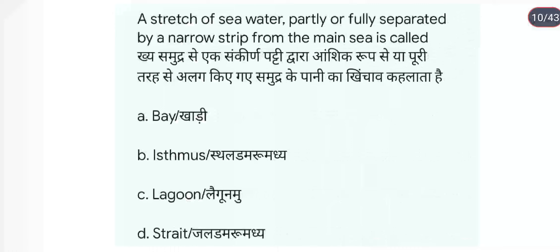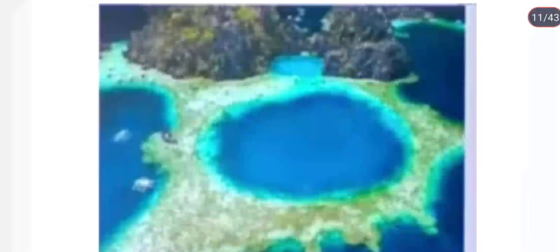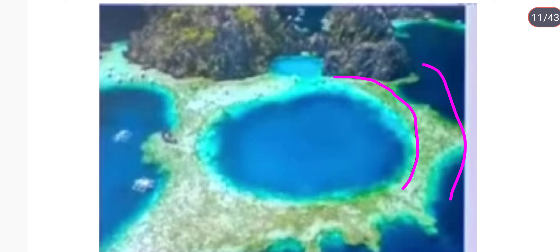A stretch of sea water partly or fully separated by a narrow strip from the main sea is called a lagoon. अपना जो Odisha में Chilika Lake है वो lagoon का उदाहरण है। यह देखिए — इधर आपका sea है और यह narrow strip है जो इसको sea से अलग कर रही है।